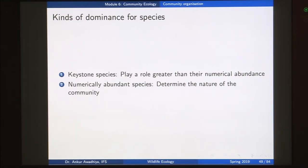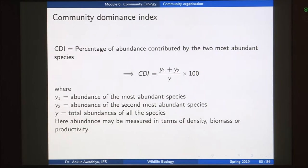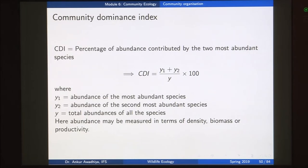For any community we can define a term called the community dominance index (CDI). CDI is the percentage of abundance contributed by the two most abundant species. CDI = (y1 + y2) / y × 100%, where y1 is the abundance of the most abundant species, y2 is the abundance of the second most abundant species, and y is the total abundance of all species. Here, abundance may be measured in terms of density, biomass, or productivity.